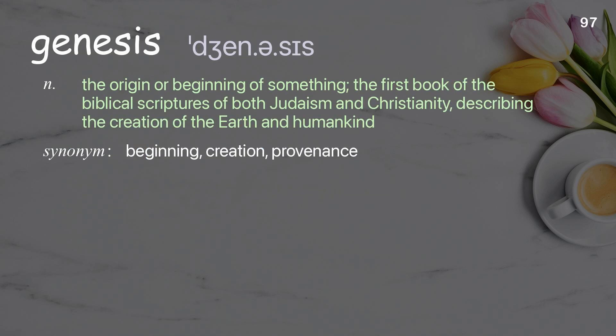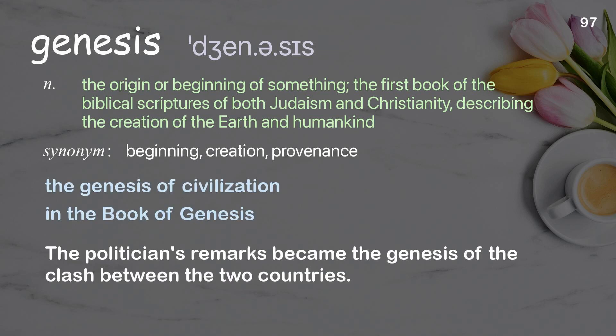Genesis: the origin or beginning of something; the first book of the biblical scriptures of both Judaism and Christianity, describing the creation of the earth and humankind. Examples: the genesis of civilization, in the book of Genesis. The politician's remarks became the genesis of the clash between the two countries.